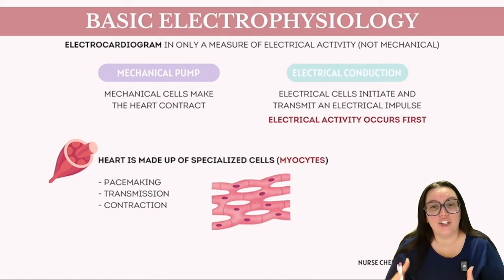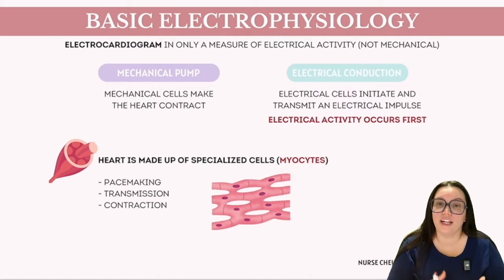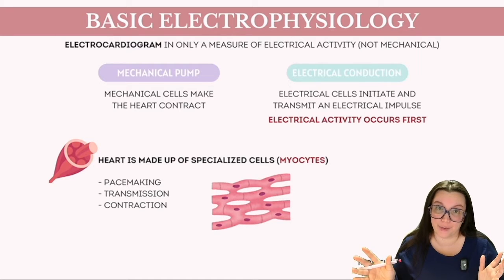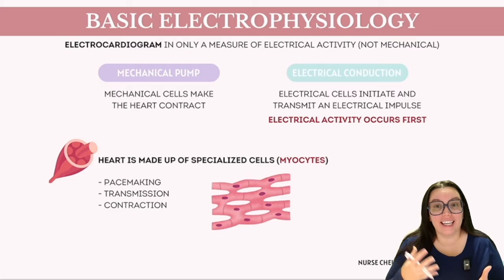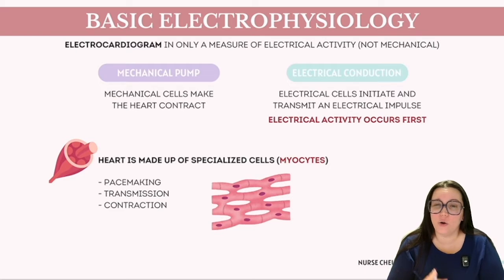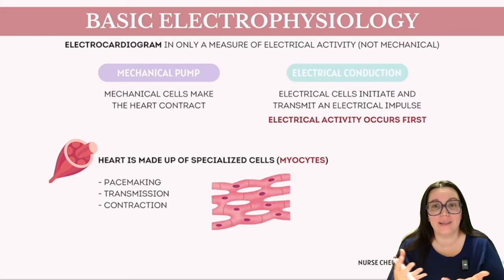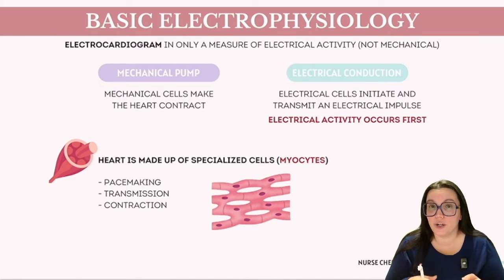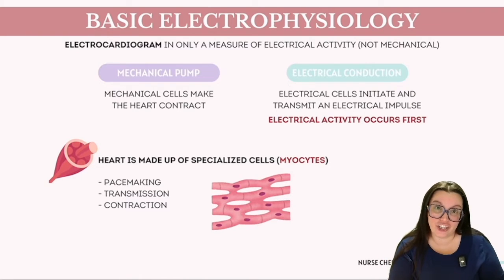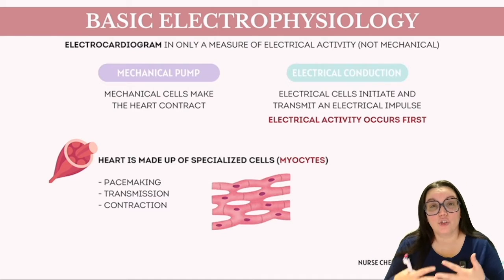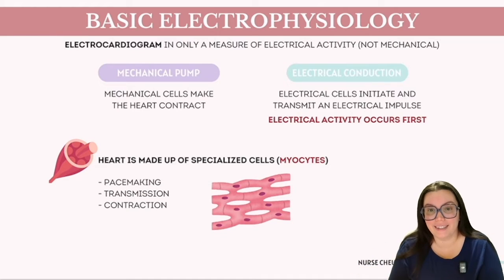Understanding the electrical conduction system is paramount for grasping how the heart works. As we explore electrocardiograms, also known as ECGs, it's important to note that they reflect only the heart's electrical activity and do not show any mechanical movement. Any alterations in the system's function affect both how the heart operates and the appearance of the EKG reading. Note that ECG and EKG are used interchangeably and mean the same thing.